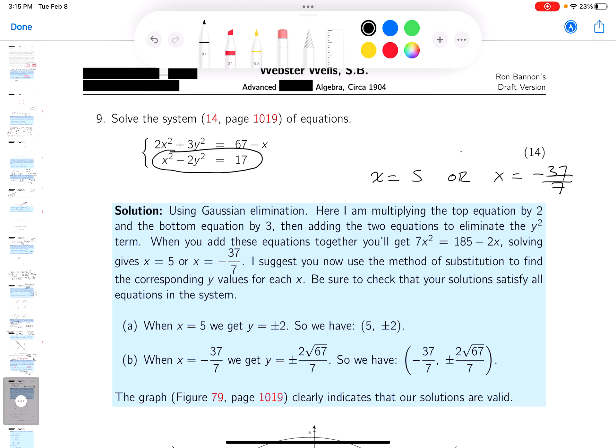I'm going to try the 5 first. So if x is 5, what are you going to get? You get 25 minus 2y squared is equal to 17. I have to take 25 away. That would give me minus 8. So y squared would equal 4, or y would equal plus or minus 2.